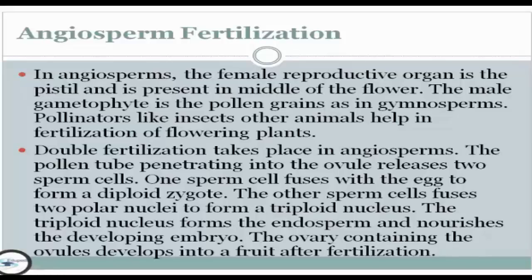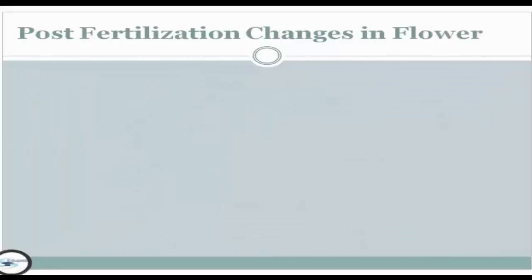The pollen tube penetrating into the ovule releases two sperm cells. One sperm cell fuses with the egg to form the diploid zygote. The triploid nucleus forms the endosperm and nourishes the developing embryo. The ovary containing the ovules develops into a fruit after fertilization.